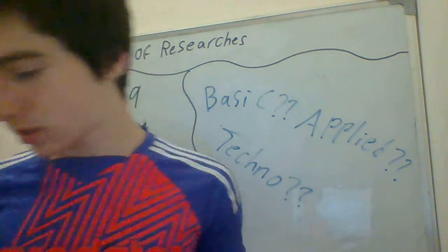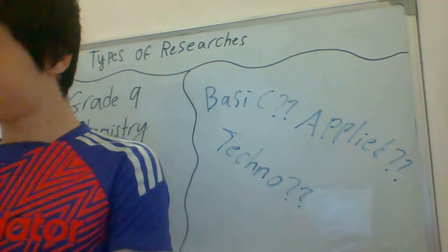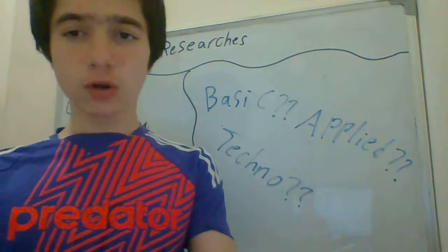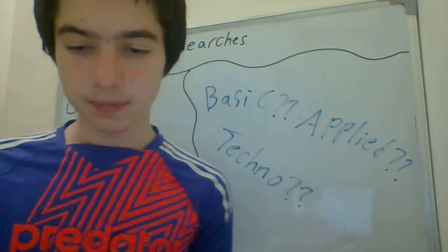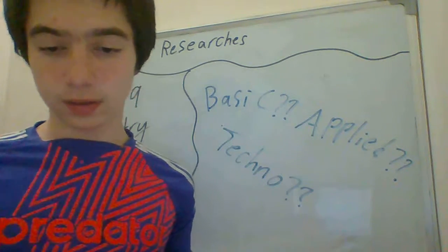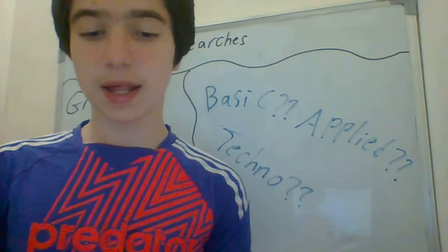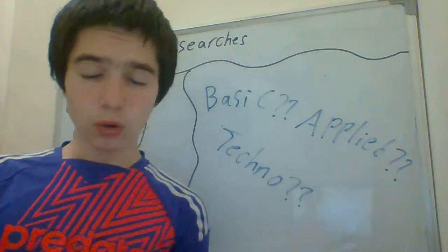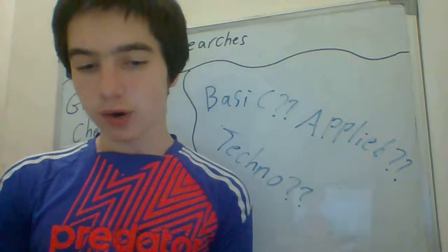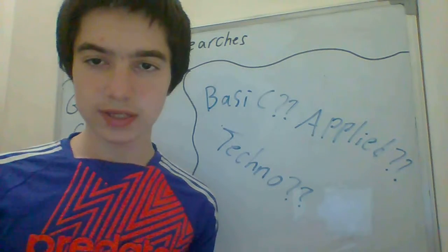Question one: What is the goal of basic research? A — to find a solution to a particular problem, B — produce new chemicals, C — increase knowledge, or D — discovering new technologies. The answer is C, increase of knowledge, because basic research is done just for the sake of increasing knowledge.